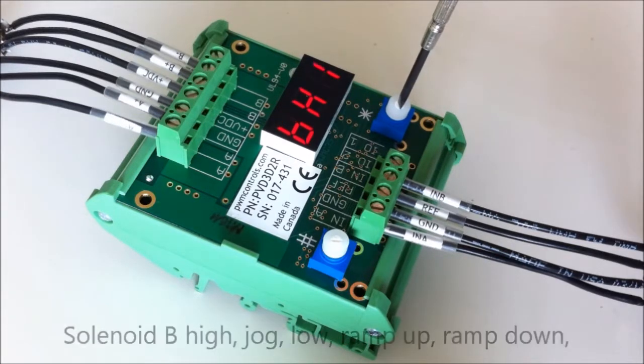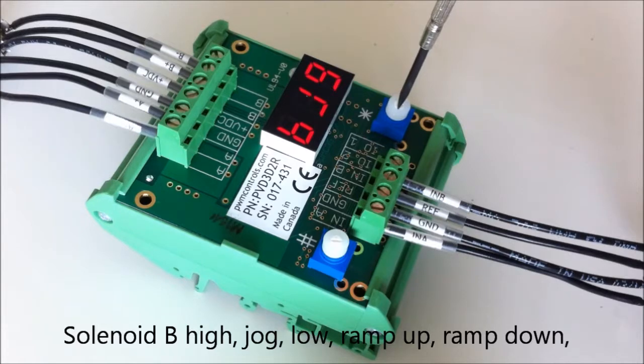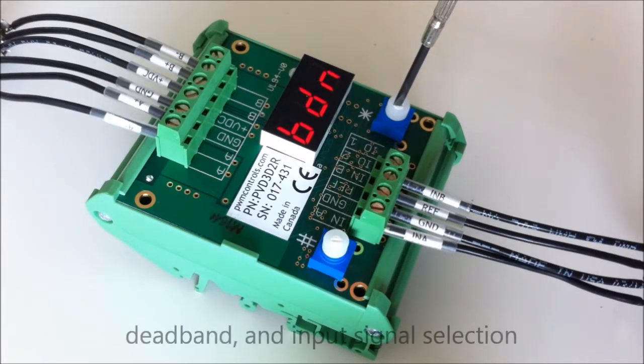Additionally, solenoid B high, jog, low, ramp up, ramp down, dead band, input signal selection.